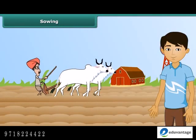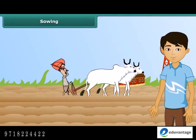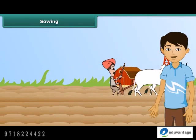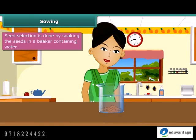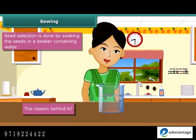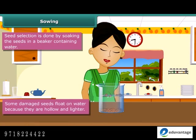Once plowing is done, the next step is sowing. Before sowing, farmers select good quality seeds to get high yields. Have you ever noticed your mother putting some grains in a vessel and pouring water into it? After a few minutes, some seeds start to float. Damaged seeds float on water because they are hollow and hence lighter. This is a good method for separating good healthy seeds from the damaged ones. Now let us see what tools are used for sowing seeds.